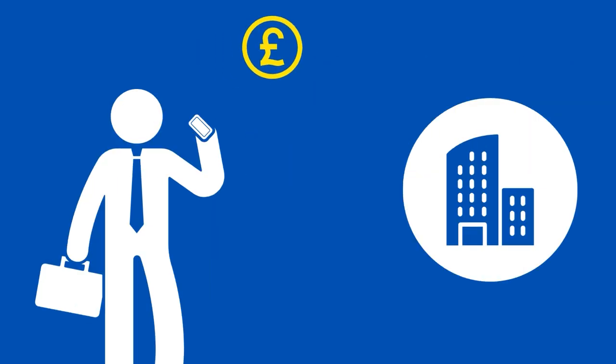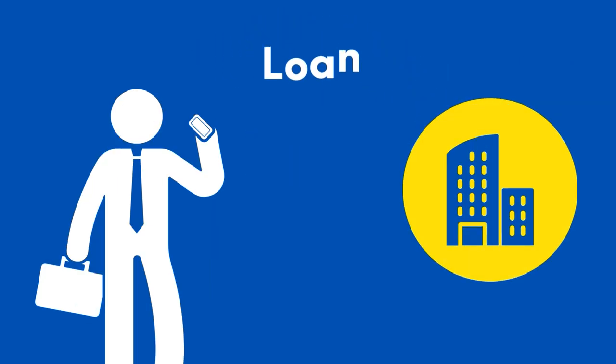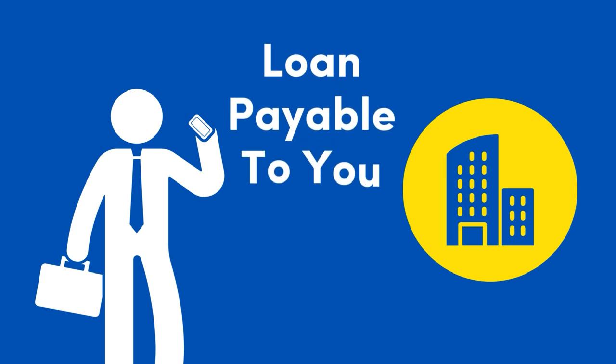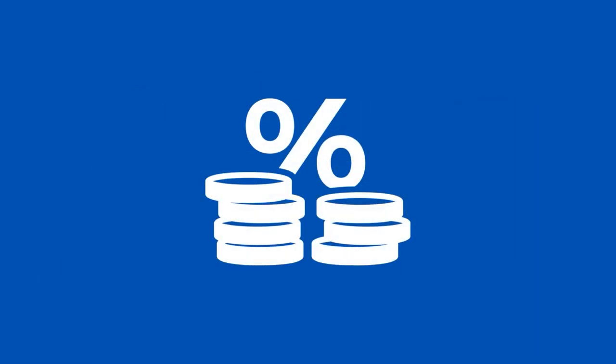If you lend money to your company to help it through a rough patch, that amount sits as a loan payable to you. A director can charge the company interest on the loan balance if they wish.